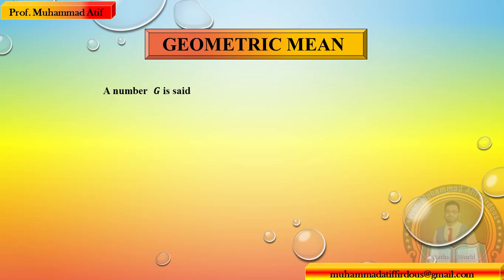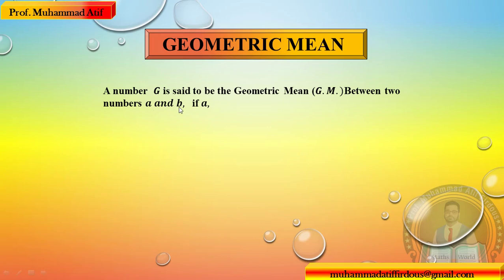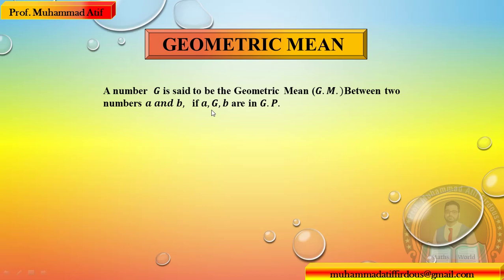A number G is said to be the geometric mean between two numbers A and B if A, G, B are in geometric progression. اگر A, G, B geometric progression میں ہوں تو G ان کا geometric mean ہوگا۔ Geometric progression کی condition یہ ہے کہ consecutive terms کا common ratio same ہوتی ہے۔